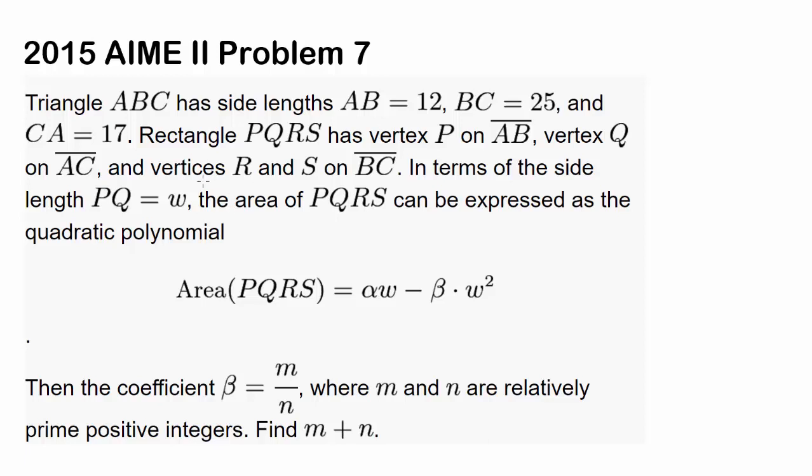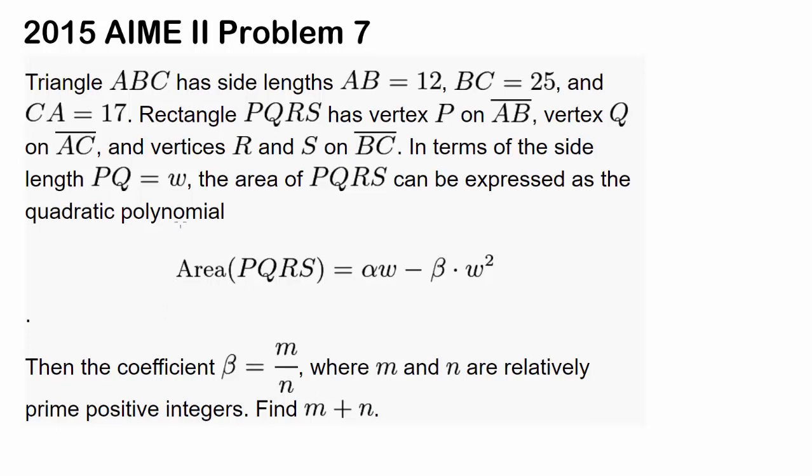Let's attempt 2015 AIME II problem 7. We have triangle ABC having side lengths AB equals 12, BC equals 25, CA equals 17.